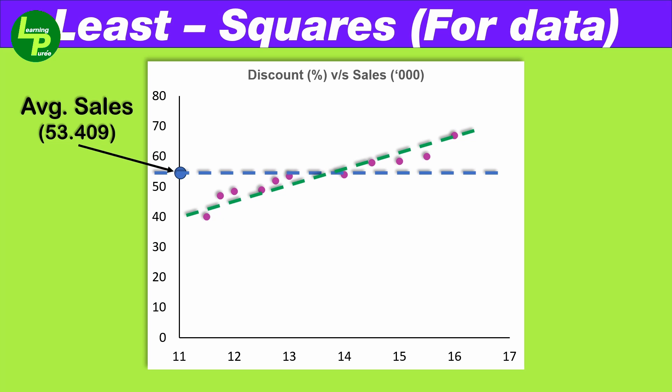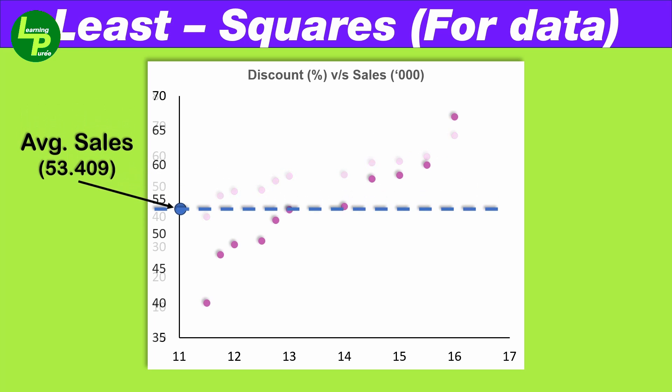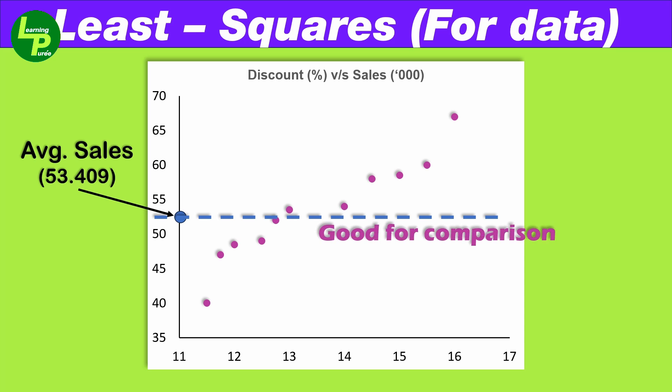If we observe these two lines, it is obvious that quite a few data points are clustered better around this new line than the first line. Therefore, the first line built on the average sales value is not a good fit for the data. It is not a good representative of the data points. However, it serves as a good starting point to compare every future iteration conducted.